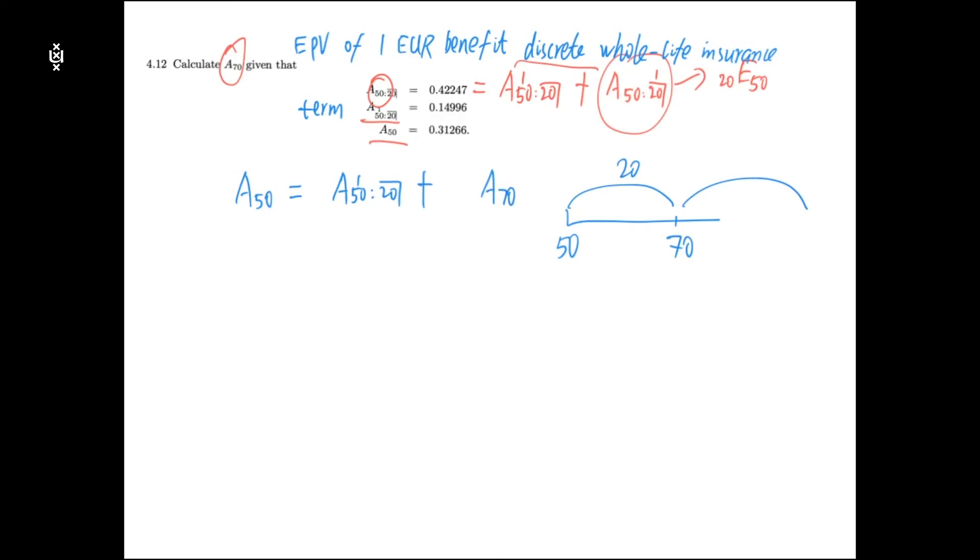But remember this notation is expected present value starting from this time point, but now we are standing here so we need to discount it back by multiplying by this discount factor. So we have an equation and we can use this equation to solve A70.